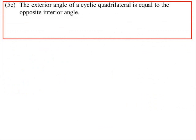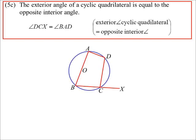Next one, also on cyclic quads. Let's draw the picture up. The exterior angle of a cyclic quad, so the exterior angle will always equal the opposite interior angle.